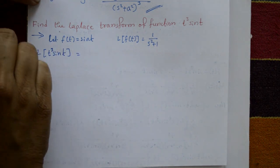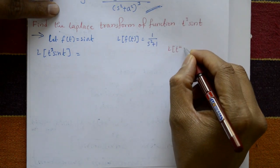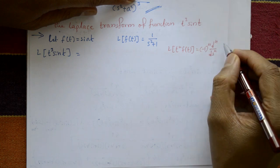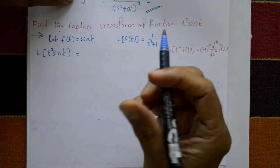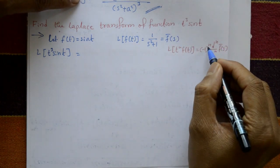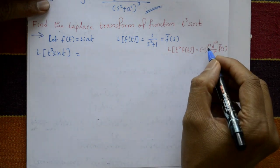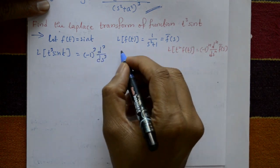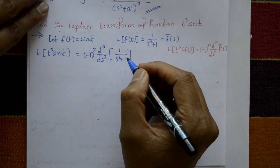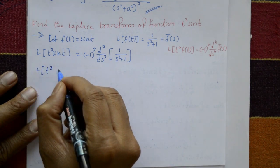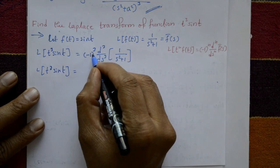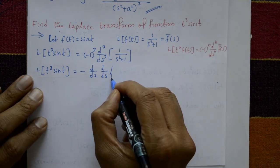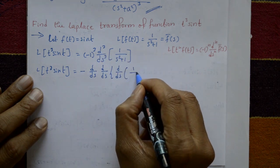Now including t³, we compute L{t³·sin(t)} using the derivative property: L{tⁿ·f(t)} = (-1)ⁿ · (dⁿ/dsⁿ) F̄(s), where F̄(s) is the Laplace transform of f(t). For t³, put n = 3, giving (-1)³ · (d³/ds³) of 1/(s²+1), which means we differentiate three times.